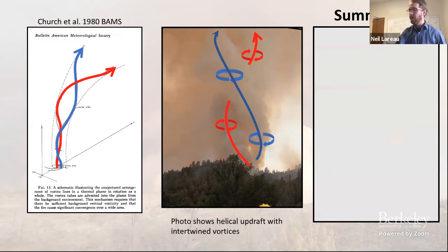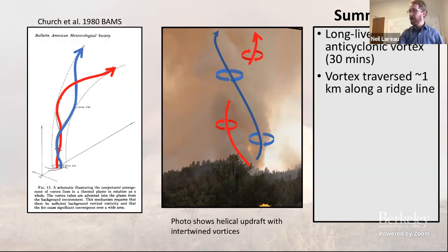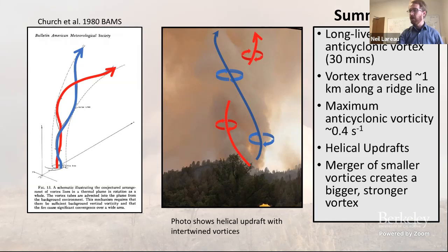This was the very first fire I went to, and it really whetted my appetite to understand what's going on in these vortices. To summarize: we had a long-lived anticyclonic vortex that traversed the ridge for one kilometer, with maximum anticyclonic vorticity consistent with dust devils and very low-grade tornadoes. It demonstrated both helical updrafts and the merger of smaller vortices to create a single larger vortex. Now I'll move on to more recent work.